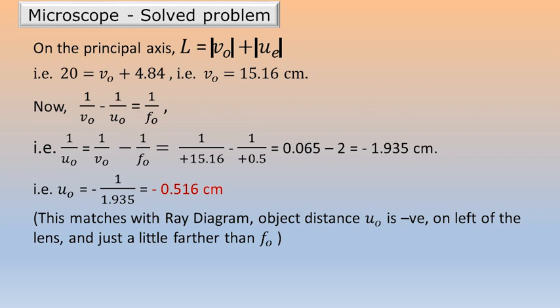Now, we can measure UO, which is required in the numerical. Again, 1 by V minus 1 by U is equal to 1 by F. Put in the right subscripts and we get UO as minus 0.516 centimeters. If we check with the ray diagram, it matches because we can see that UO is between F O and 2F O. Therefore, it is in the right spot.